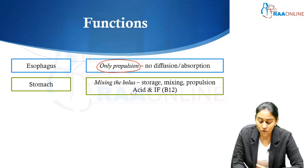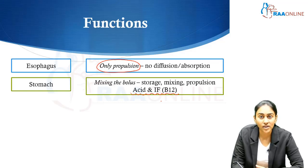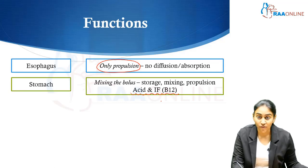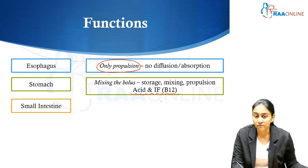The stomach also has two important secretory functions — two important products derived from the parietal cells of the stomach. One is the hydrochloric acid and the other is the intrinsic factor, which protects vitamin B12 all the way until it reaches the ileum where it is going to be absorbed.